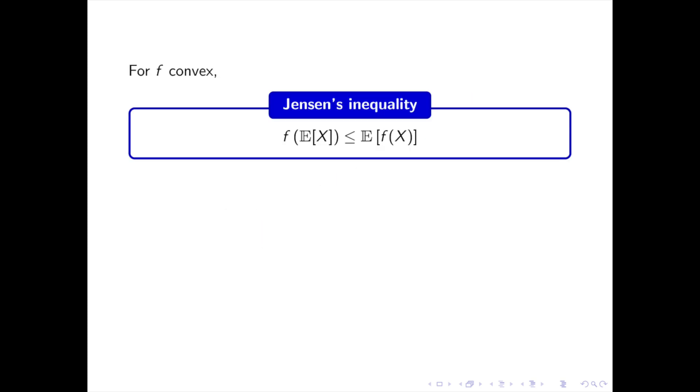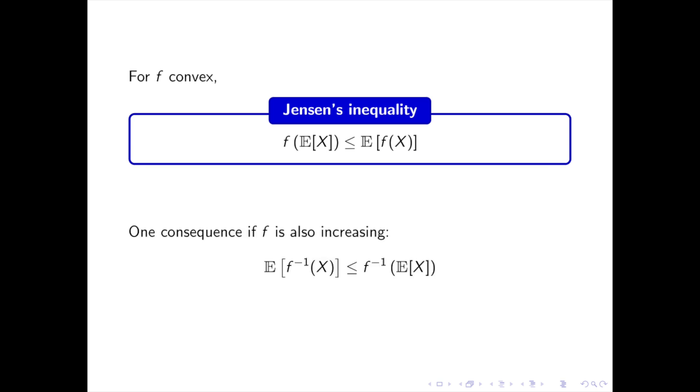Now an important property of convex functions is Jensen's inequality. F of the expectation of x is smaller than the expectation of f of x. In today's paper, we will use the following corollary of Jensen's inequality, which states that if f is also increasing, then the expectation of f minus 1 of x is smaller than f minus 1 of the expectation of x. Convex functions? Done.